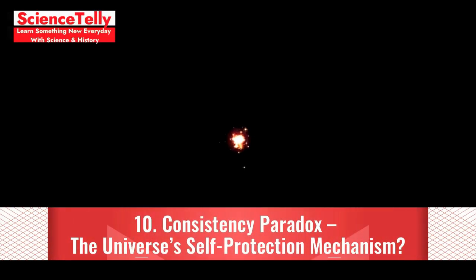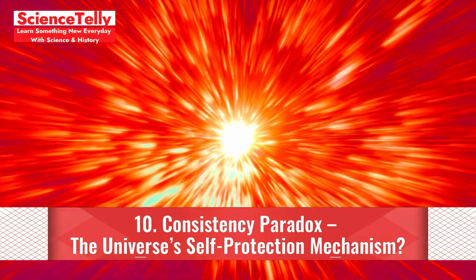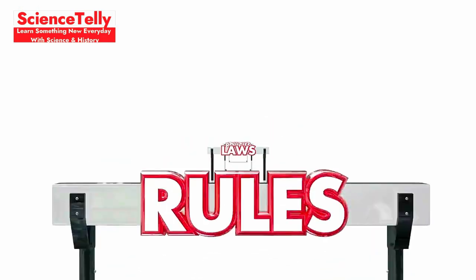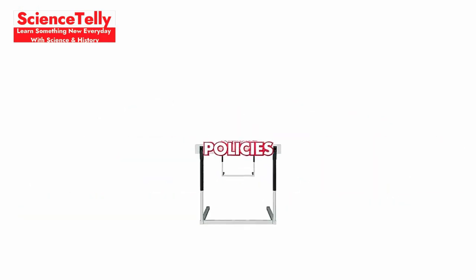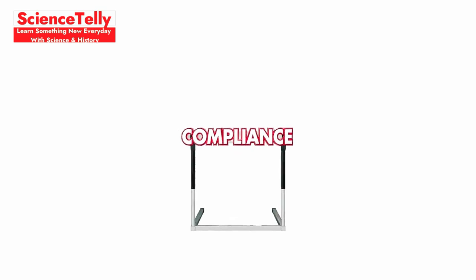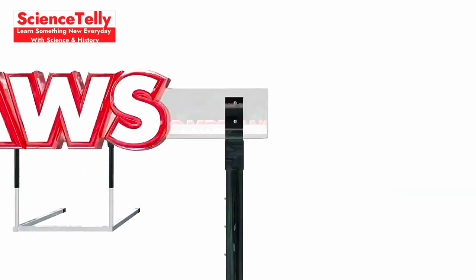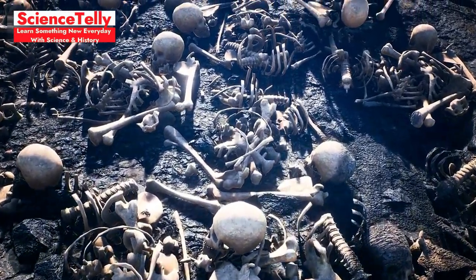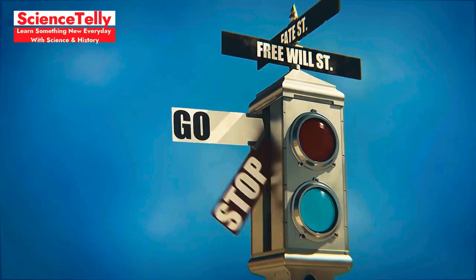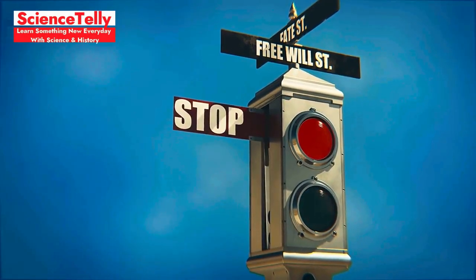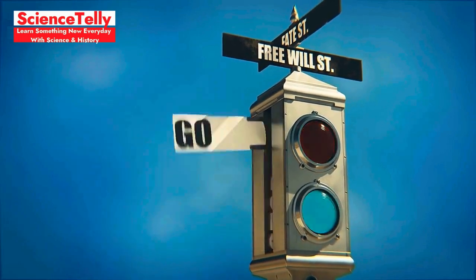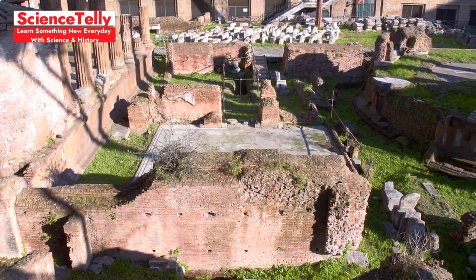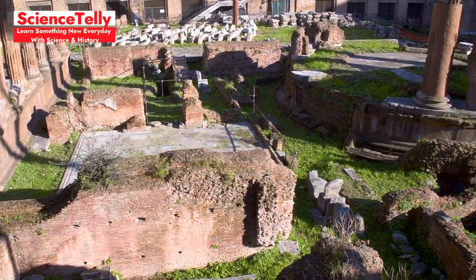Ten, consistency paradox. The universe's self-protection mechanism? The consistency paradox proposes that any attempt to alter history is doomed to fail, almost as if the universe enforces its own rules. If you tried to stop a major historical event, you'd be thwarted at every turn. This paradox suggests that free will might be limited for time travelers. Maybe history is unchangeable, with time itself self-correcting any attempt to rewrite it.